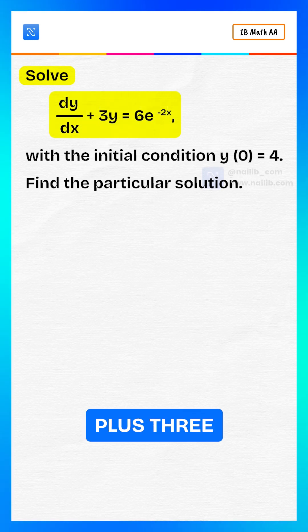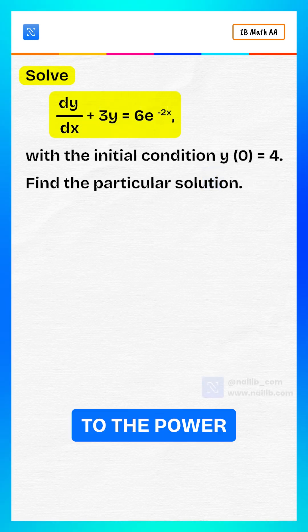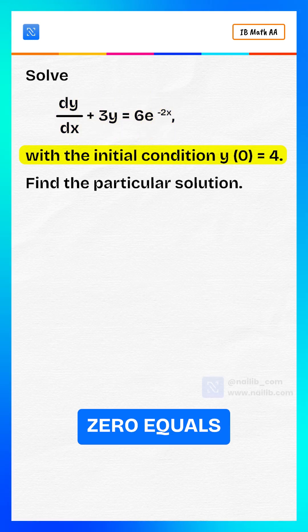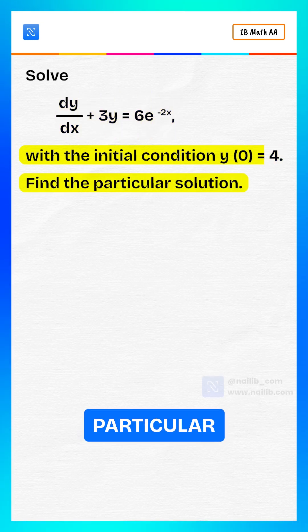Solve dy by dx plus 3y equals 6e to the power negative 2x with the initial condition y(0) equals 4. Find the particular solution.